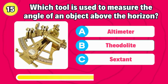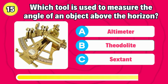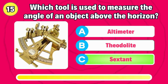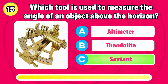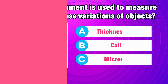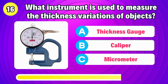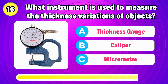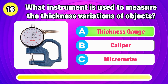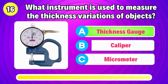Which tool is used to measure the angle of an object above the horizon? That's right, it's sextant. What instrument is used to measure the thickness variations of objects? Answer is thickness gauge.